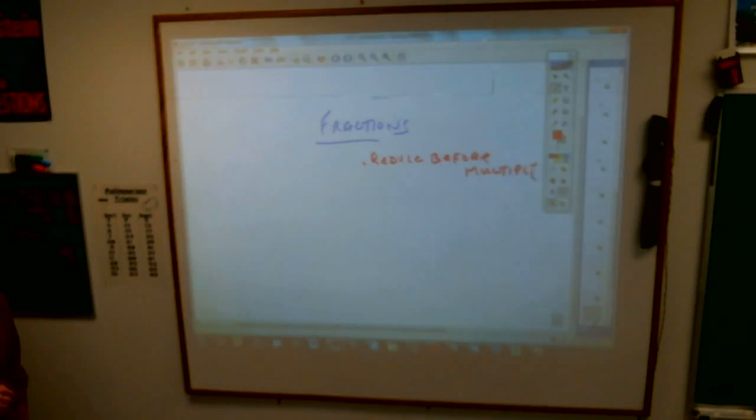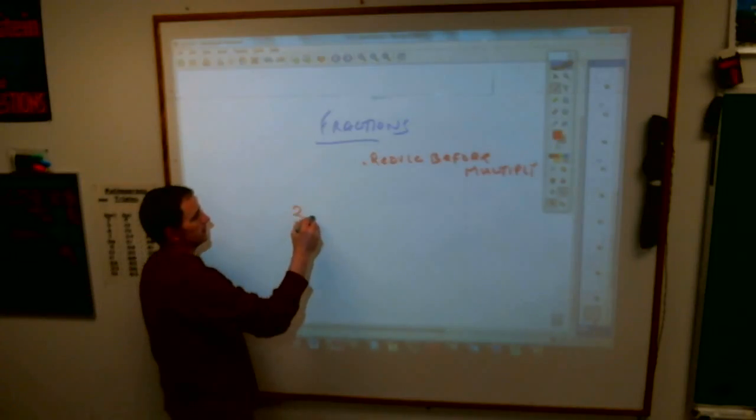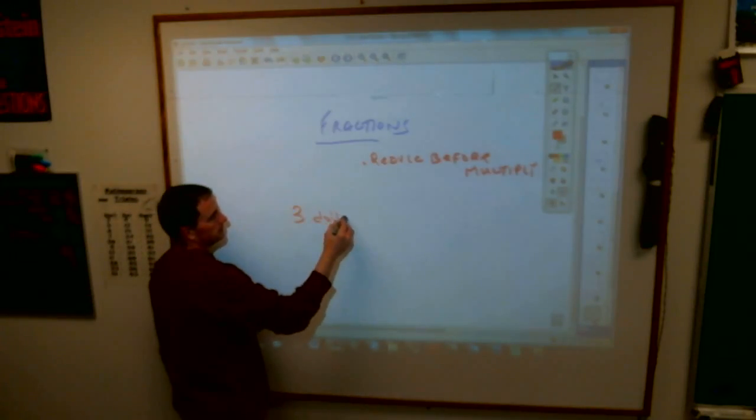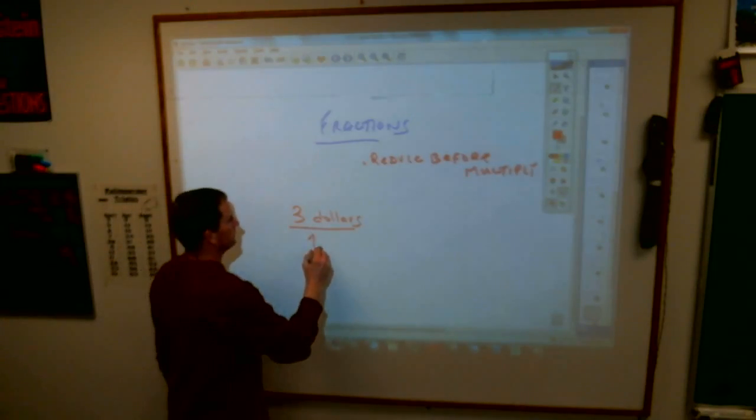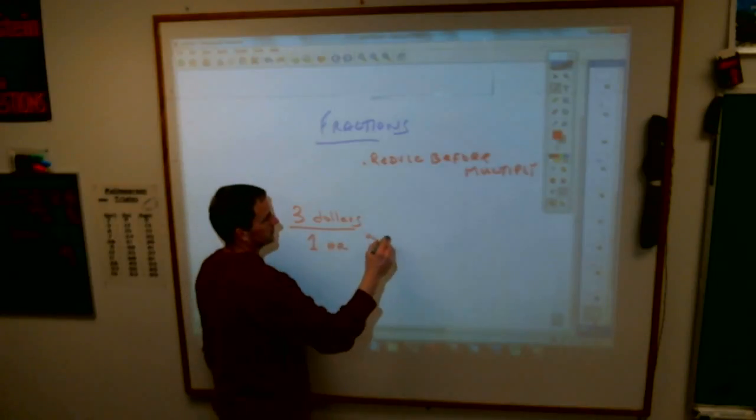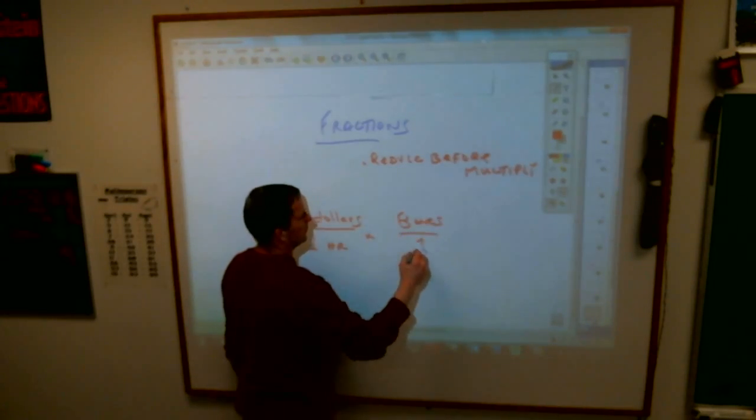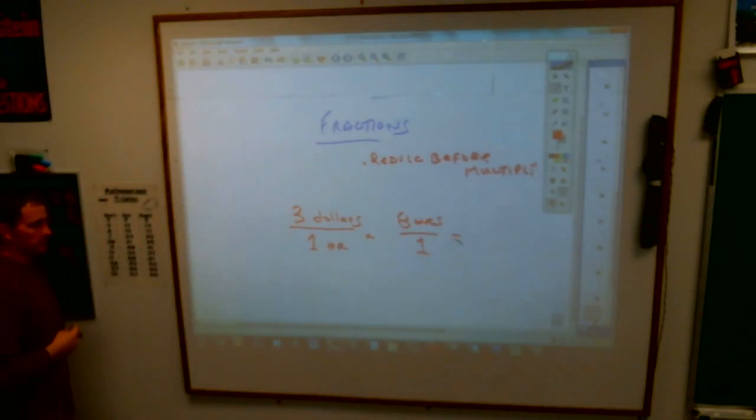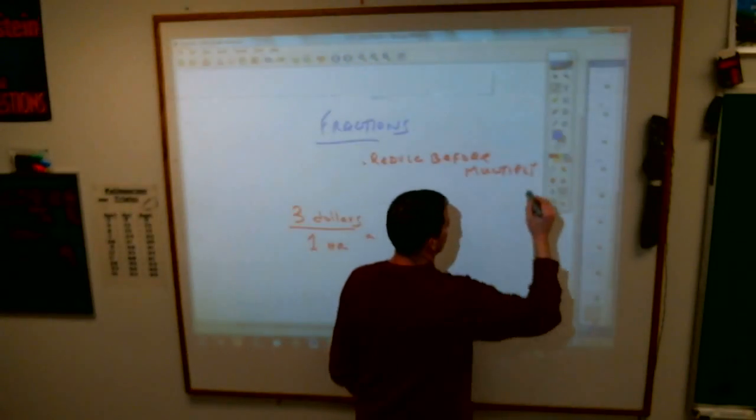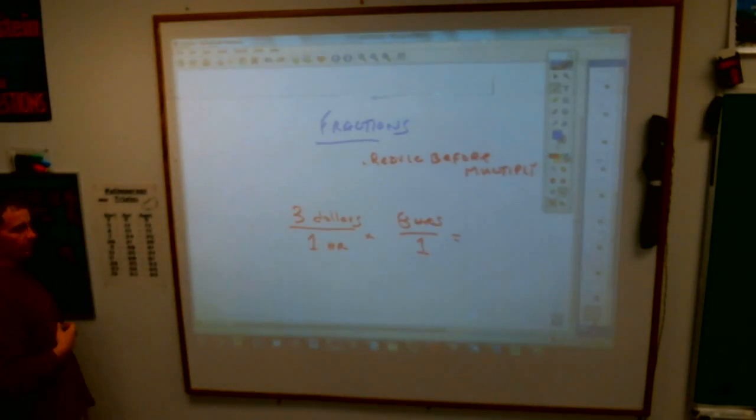Let's say you have $3 over one hour times eight hours. $3 over one hour times eight hours over one. It's kind of time in your mathematical world that you start doing things that have labels and stuff like that and a little bit more complex fractions.